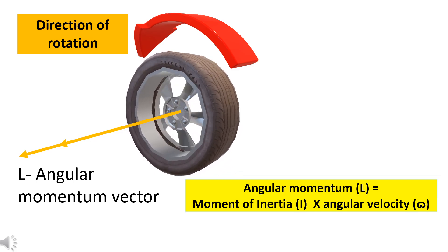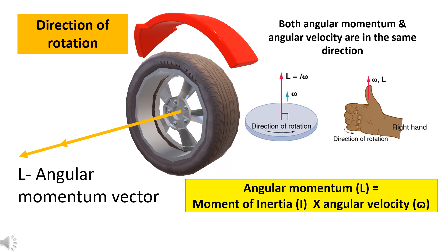The direction of the angular momentum is given by the right-hand thumb rule. When the fingers are curled in the direction of rotation, the thumb points in the direction of the angular momentum.